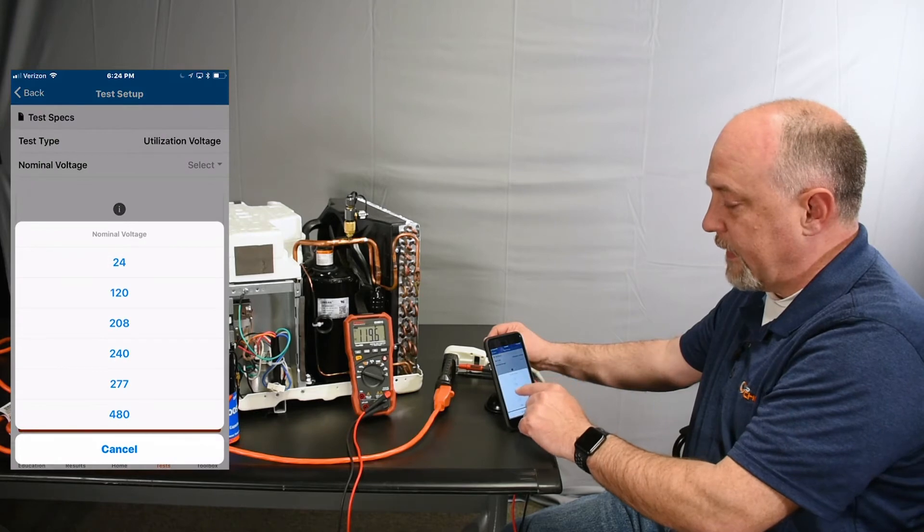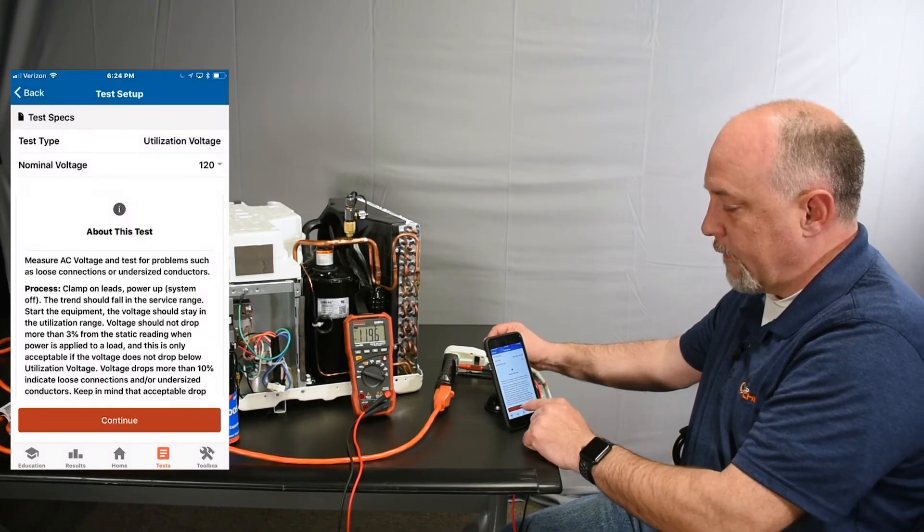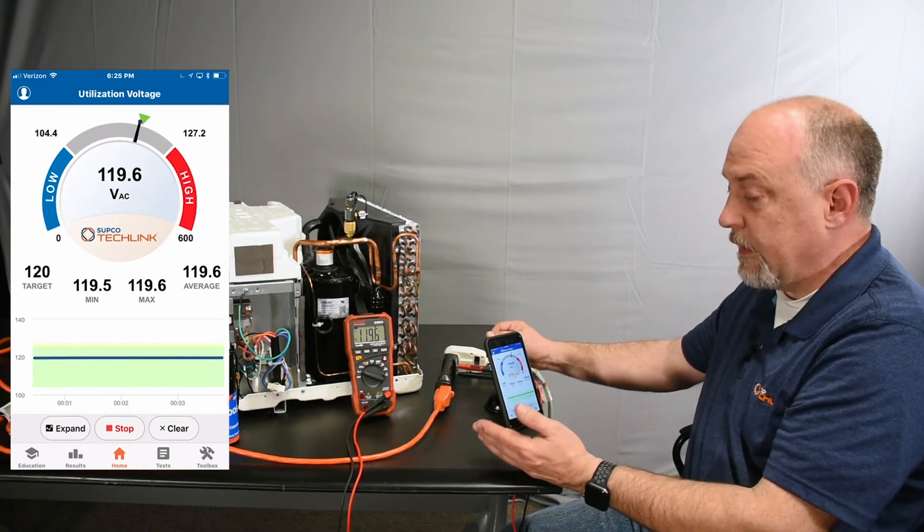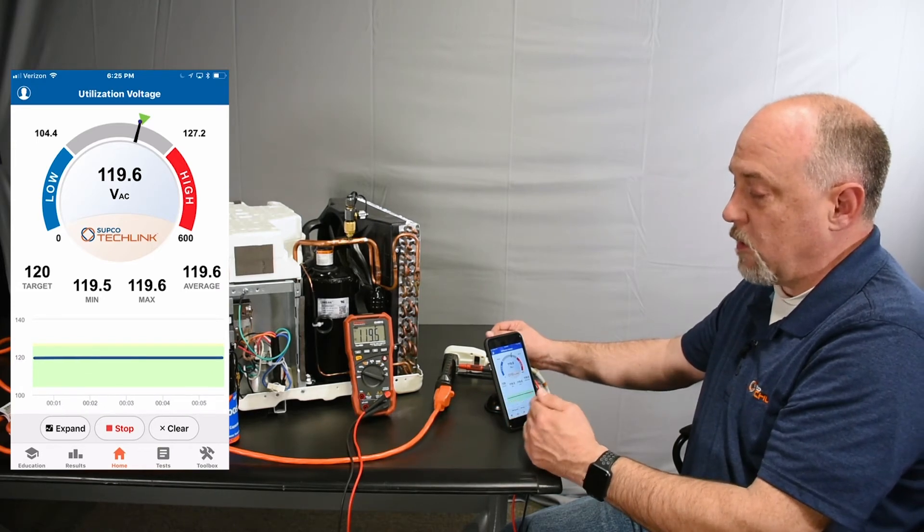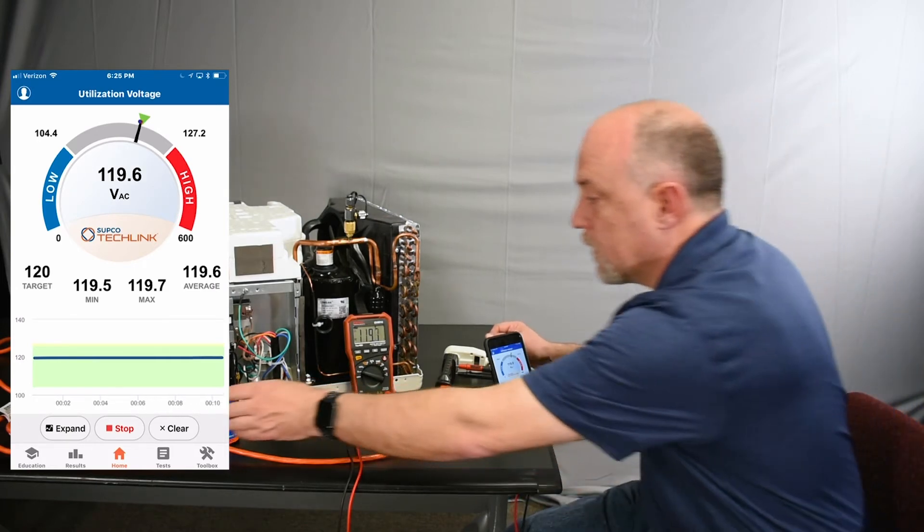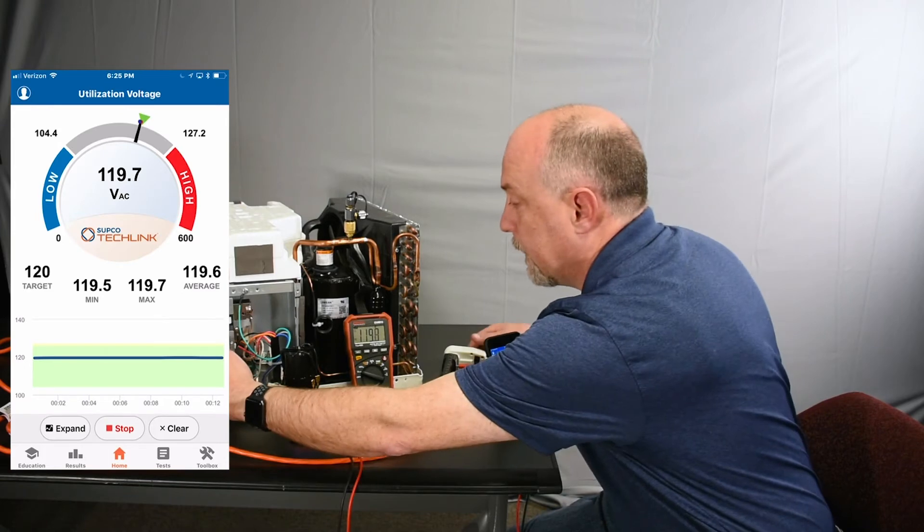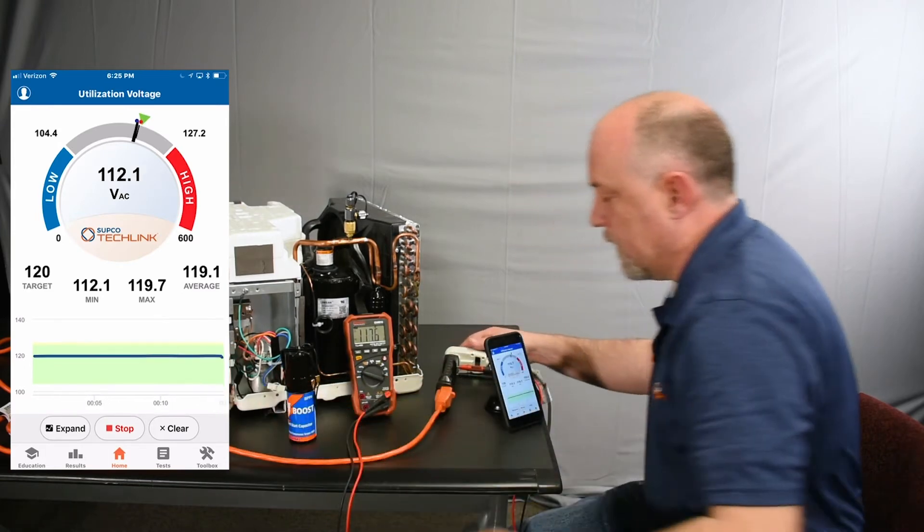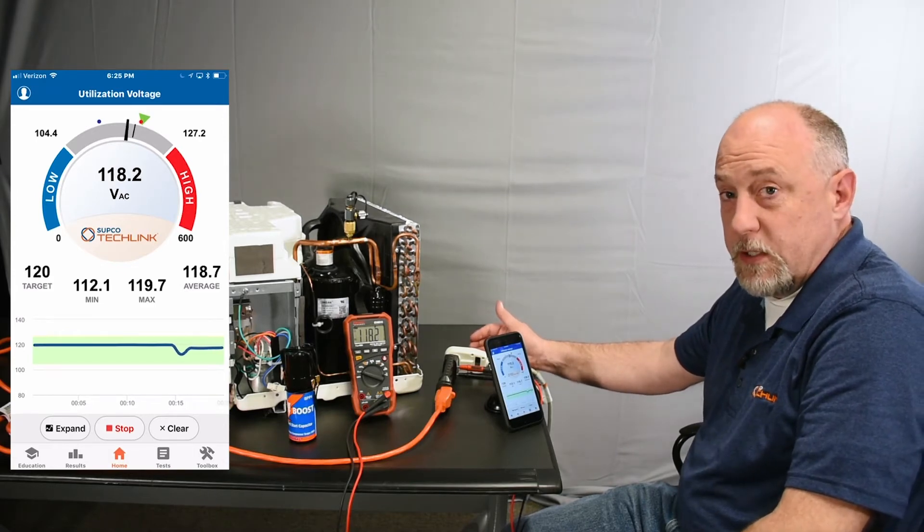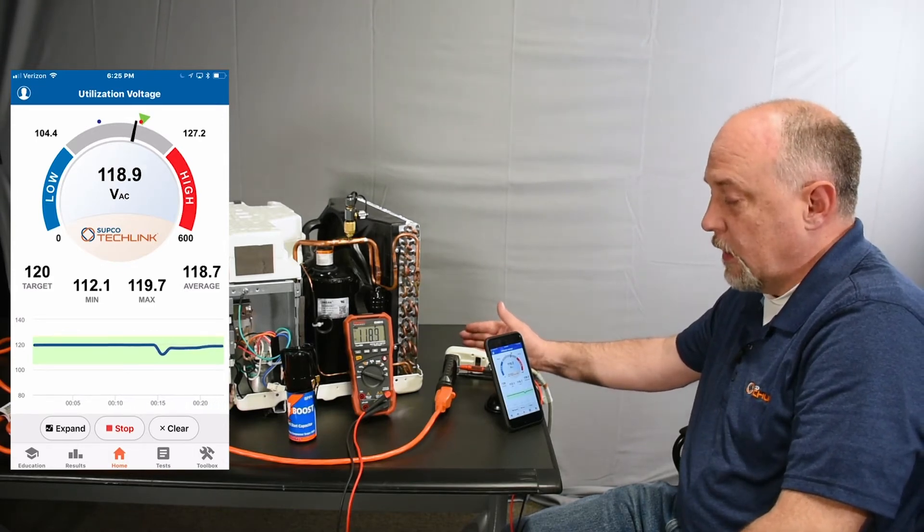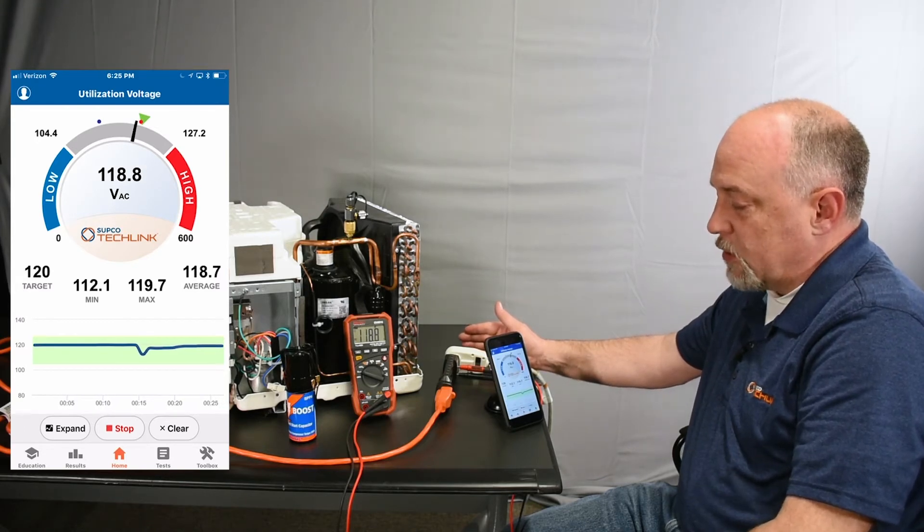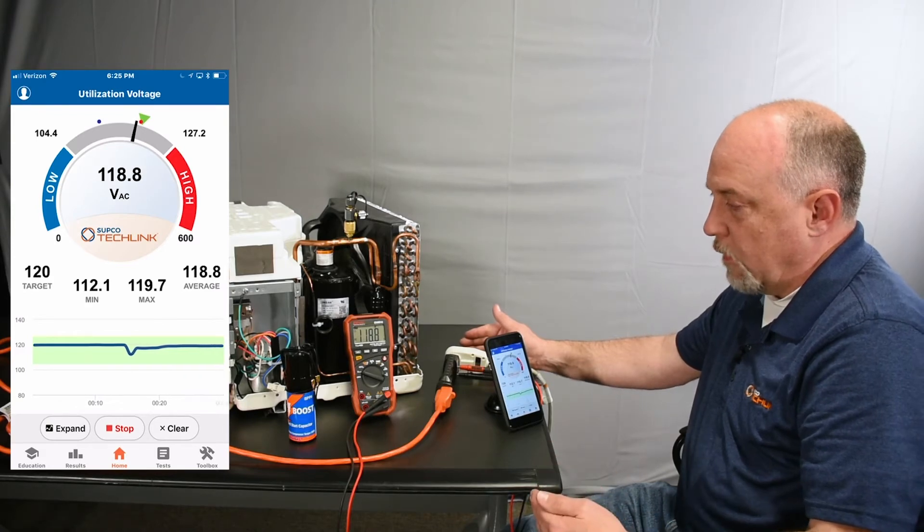Utilization is different in that the unit is going to be on. I'll hit continue and you can see we're back at 119 volts, but our scale changed. Now our utilization voltage can go down to 104 and up to 127.2. We'll start this unit up and it starts right away. Our voltage had a small drop down to 117.2, but still well within acceptable range. At startup we dropped to 112.1 but we're right back up.